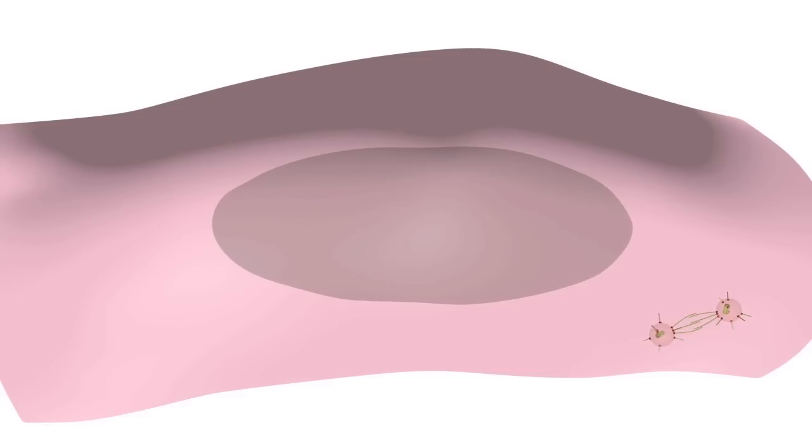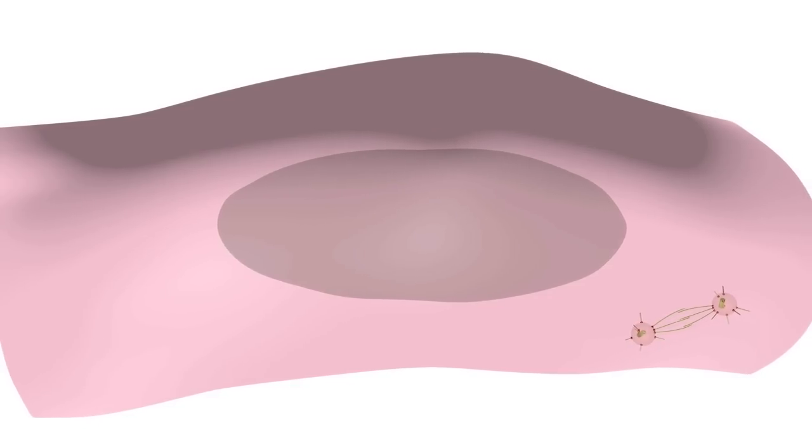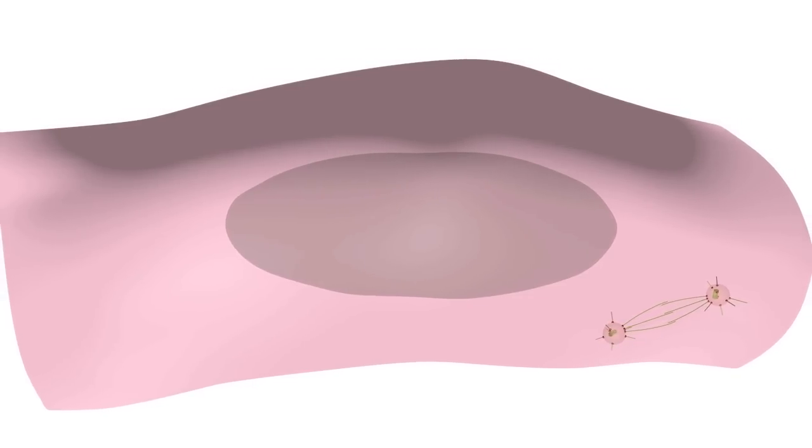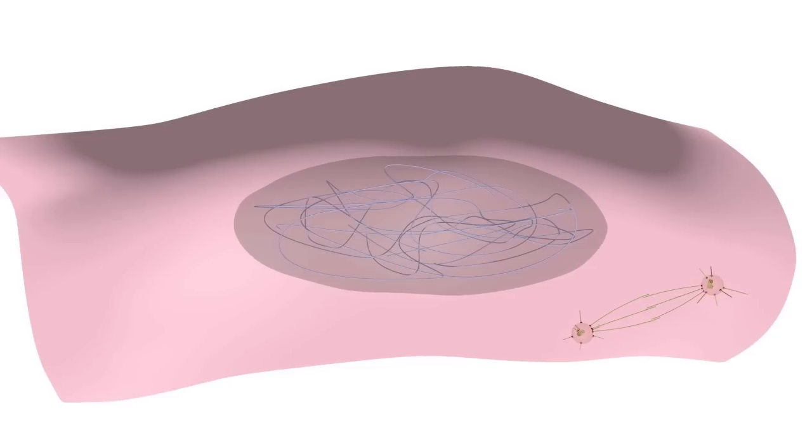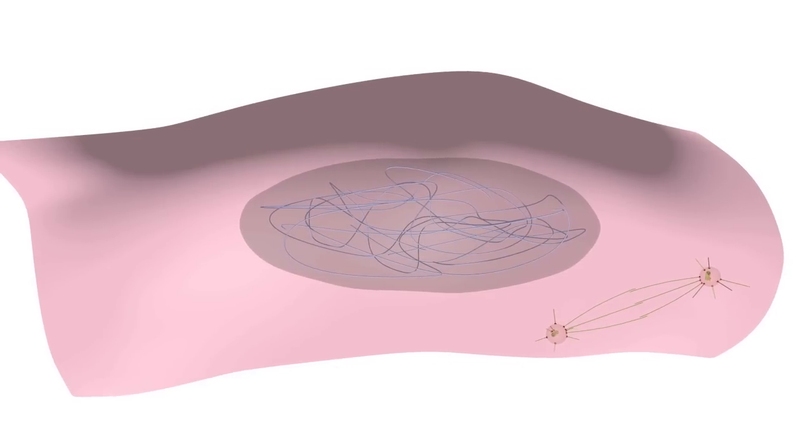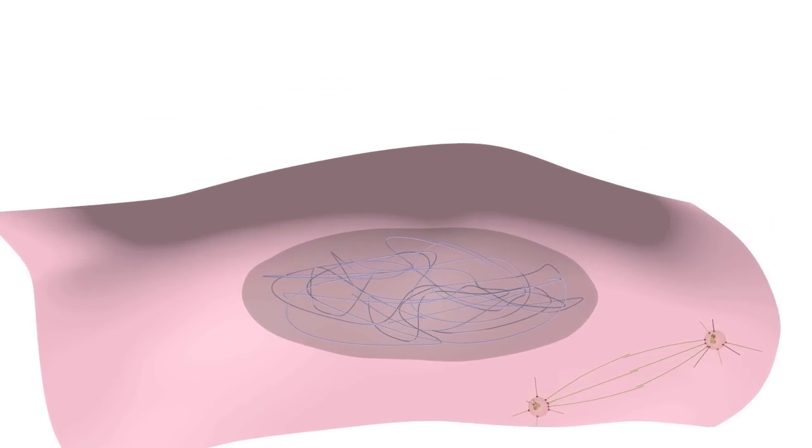We have to keep in mind that the centrosomes and their associated microtubules are in the cytoplasm, while the chromosomes are in the nucleus. So how do spindle microtubules gain access to the chromosomes? The answer to this will become clear when we get further into mitosis.